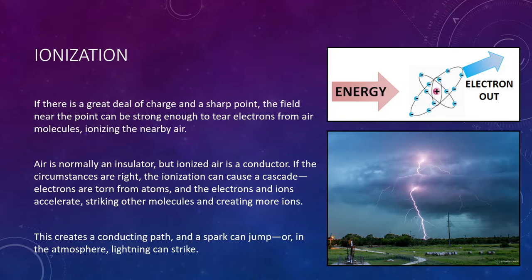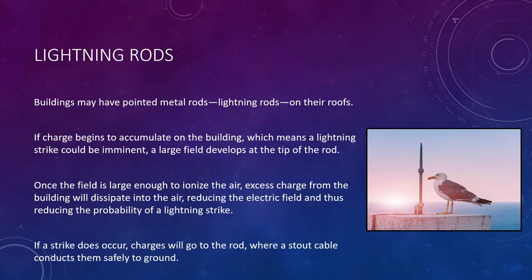Even more fascinating are lightning rods. Now that we have a basic understanding of electric fields and conductors, this is a pretty neat discussion. Tall, pointy objects tend to be struck by lightning, and metal objects tend to be struck by lightning. So you might question why we would ever want to put tall, pointy, metal objects on top of our buildings if we don't want lightning to hit.